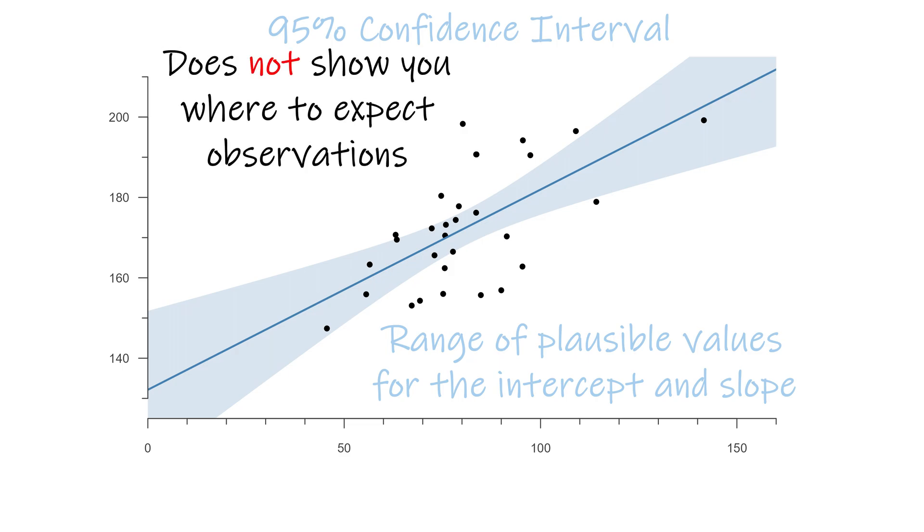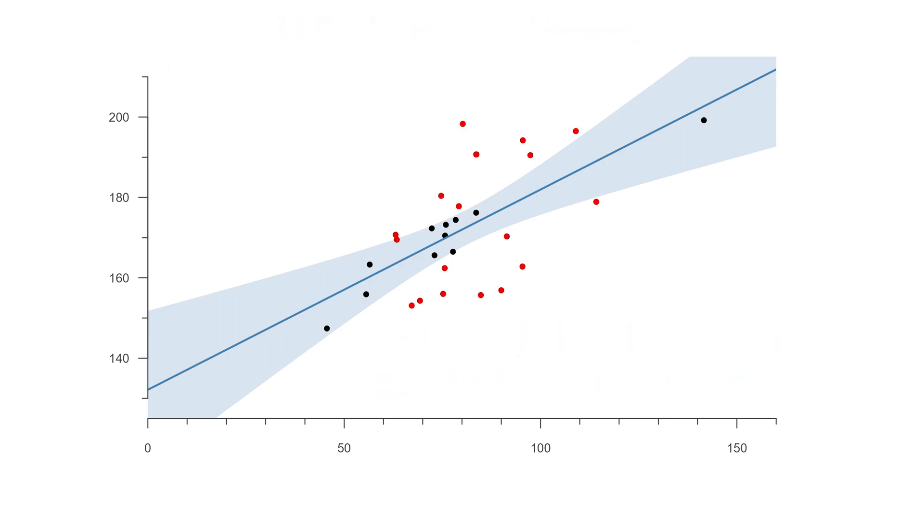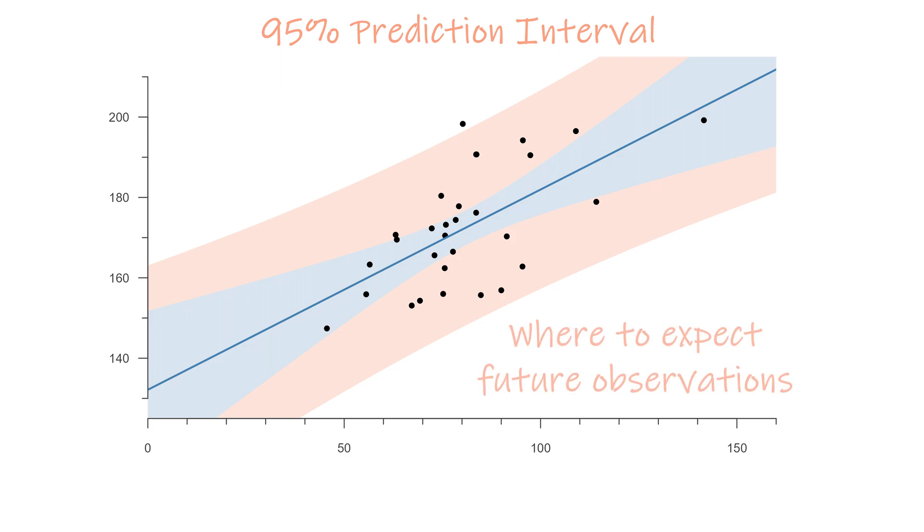it still does not tell us much about where to expect the actual observations. Clearly, most of them fall outside the confidence interval. If you want to predict future observations, you need something else, called a prediction interval, which shows you where you would expect a certain percentage of future observations based on this model.